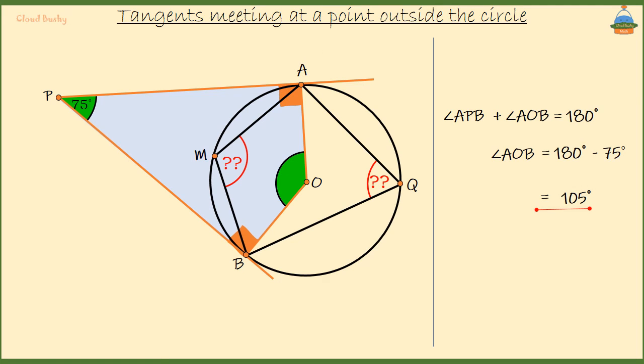Now, we have AOB at the center of the circle is equal to 105 degrees. We want to find the size of angle AQB. AQB is on the circumference of the circle. Both angles AOB and AQB are coming from chord AB.